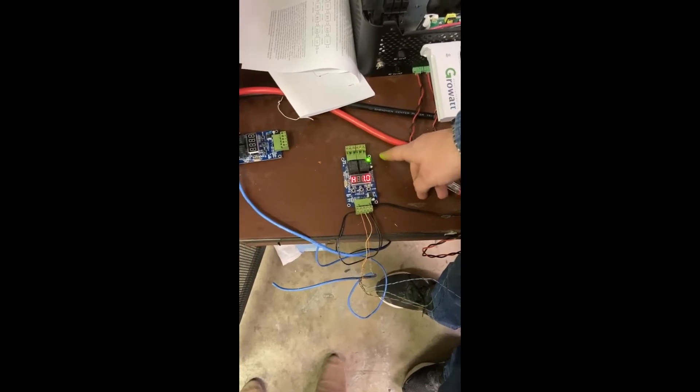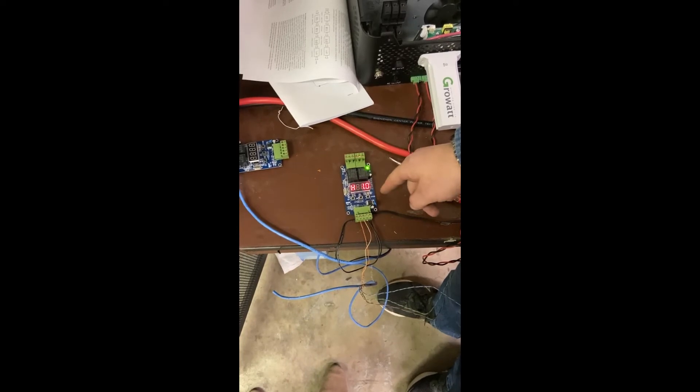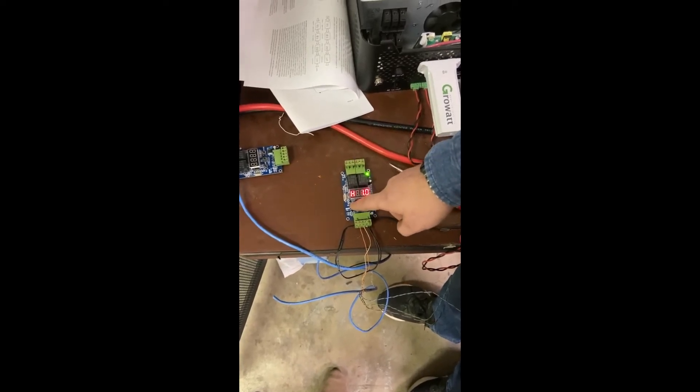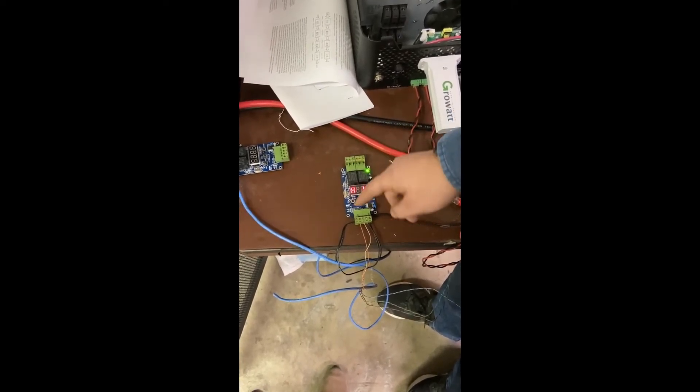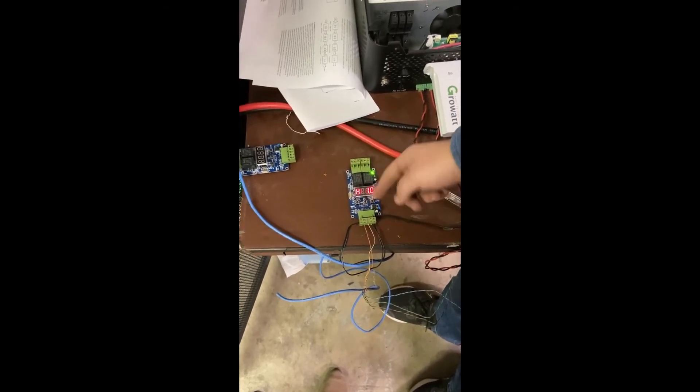We want it to turn on at a certain point and we want it to turn off at a certain point. So when it hits high, it will turn on. Right now we have 48 volts. It's set automatically to 11, so that's why it turned on.